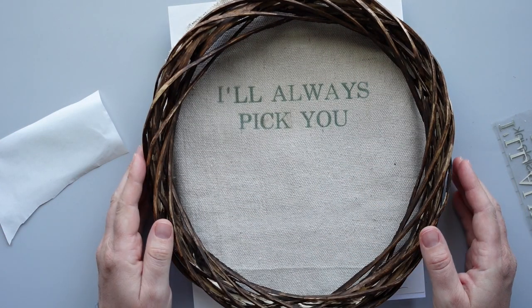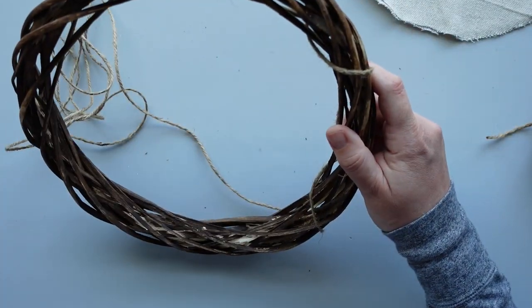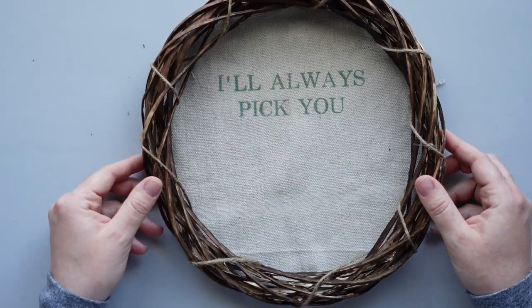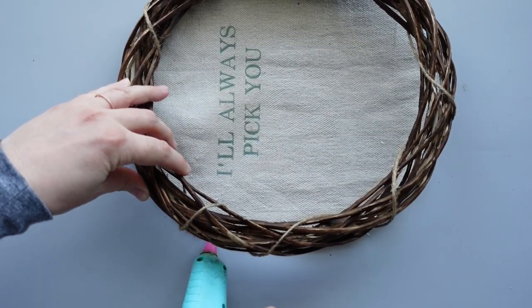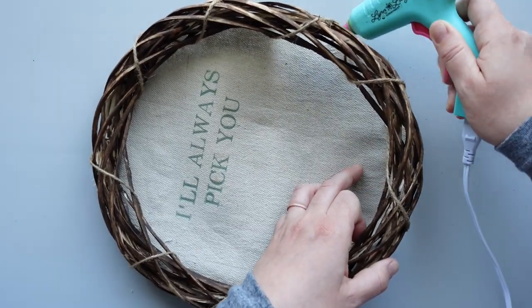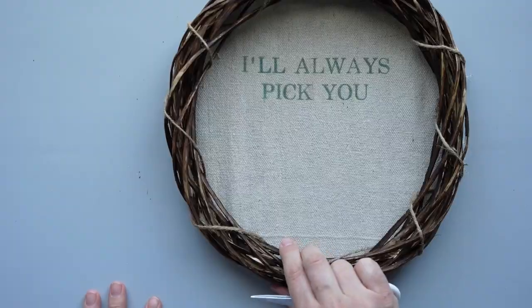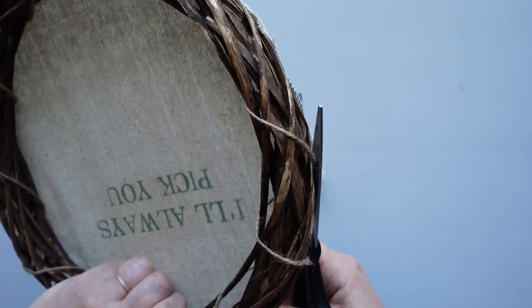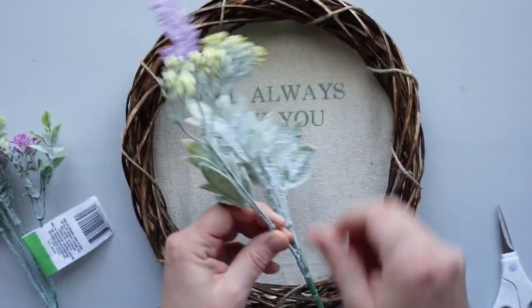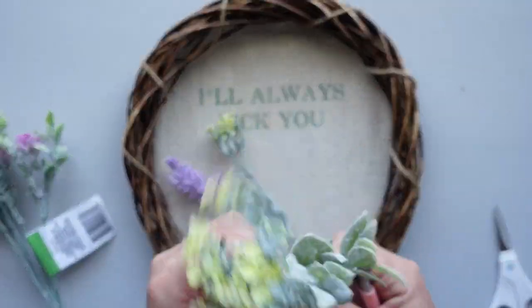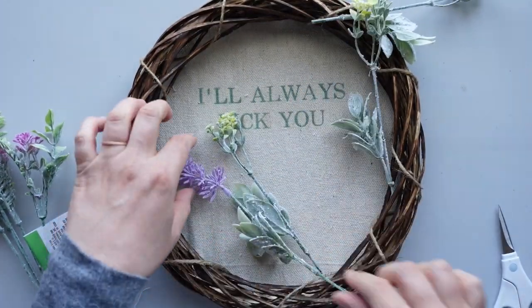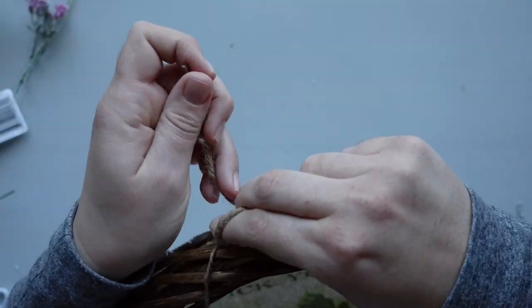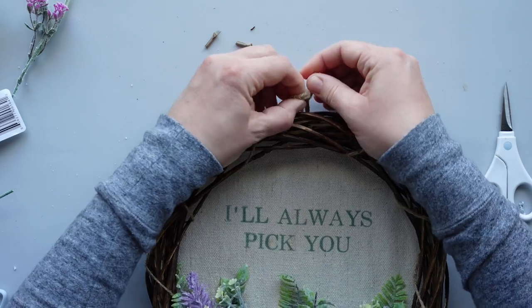Once I was happy with how the words looked, I wrapped a piece of jute twine around the wreath to add more visual interest. Then I attached the canvas to the back of the wreath using hot glue. I worked in sections to make sure the canvas was tightly secured to the wreath. Once the glue hardened, I trimmed the excess canvas from around the wreath. Next, I grabbed some greenery picks from Dollar Tree. I used my wire cutter to trim the individual stems from the picks. Then I trimmed the stems to varying lengths and arranged them at the bottom of the wreath. After arranging the greenery and flowers, I tied a piece of thick jute twine to the top of the wreath to act as a hanger.